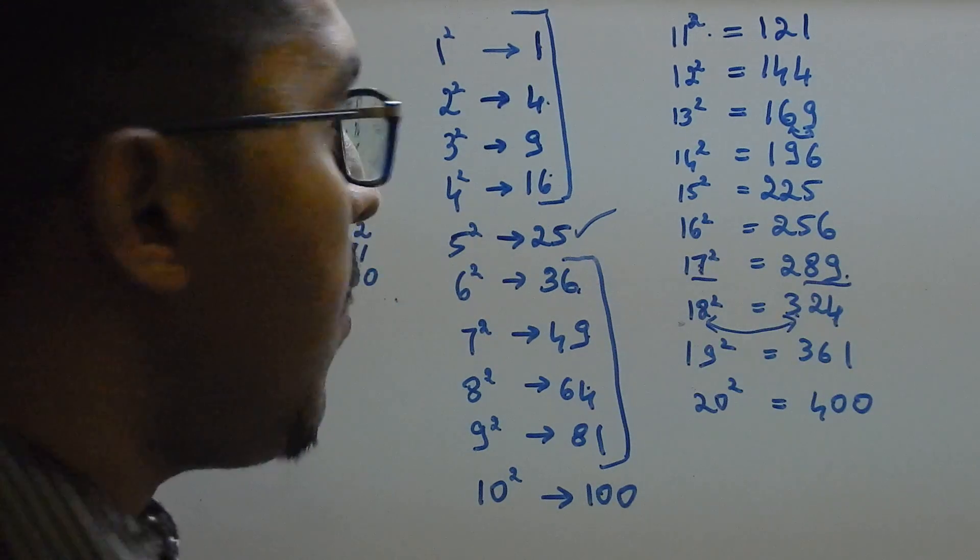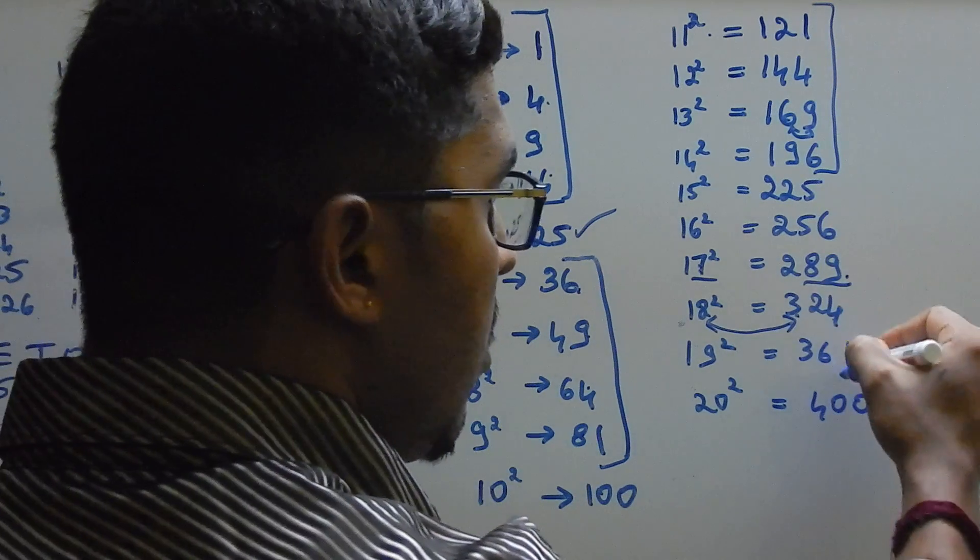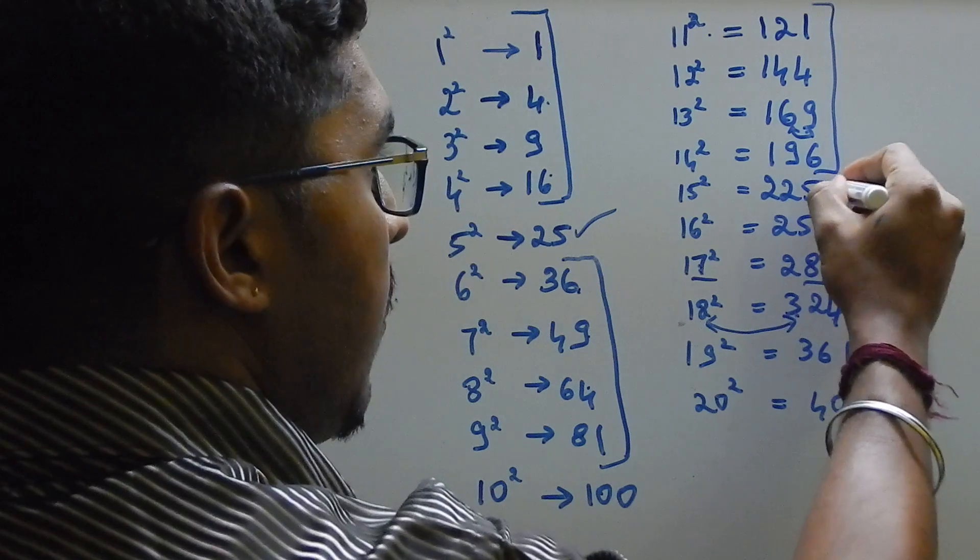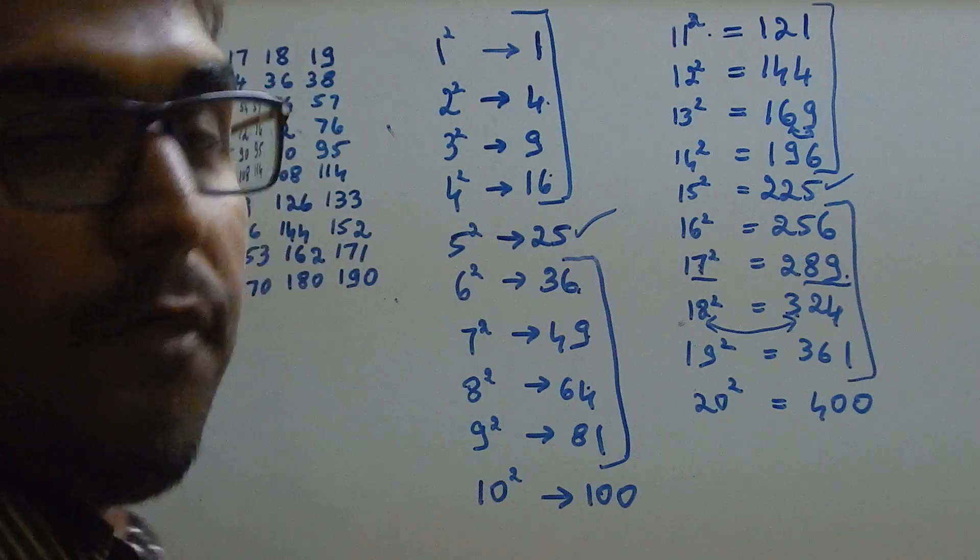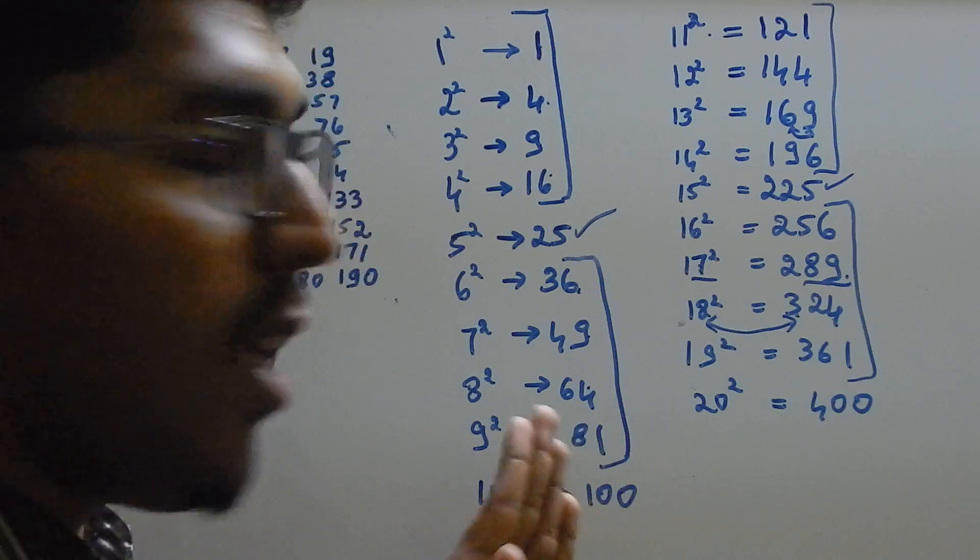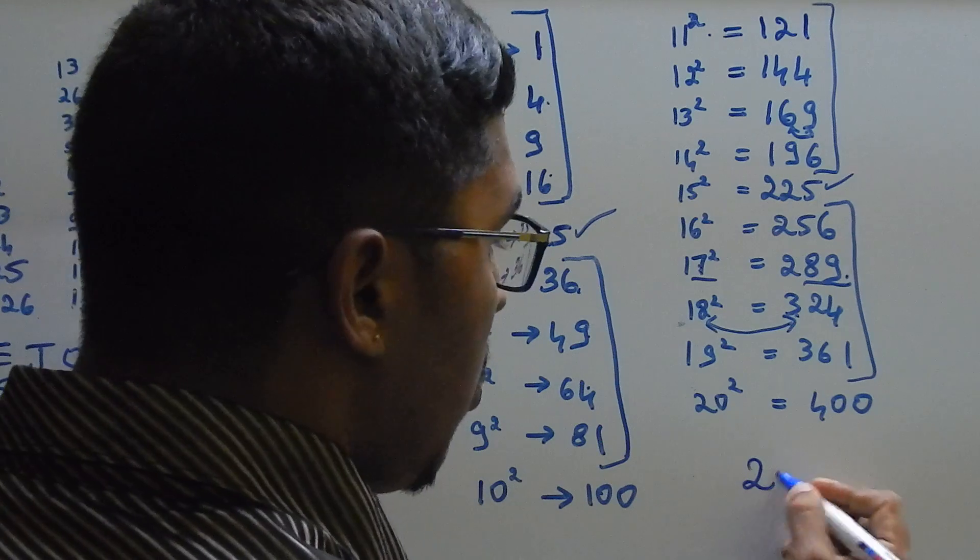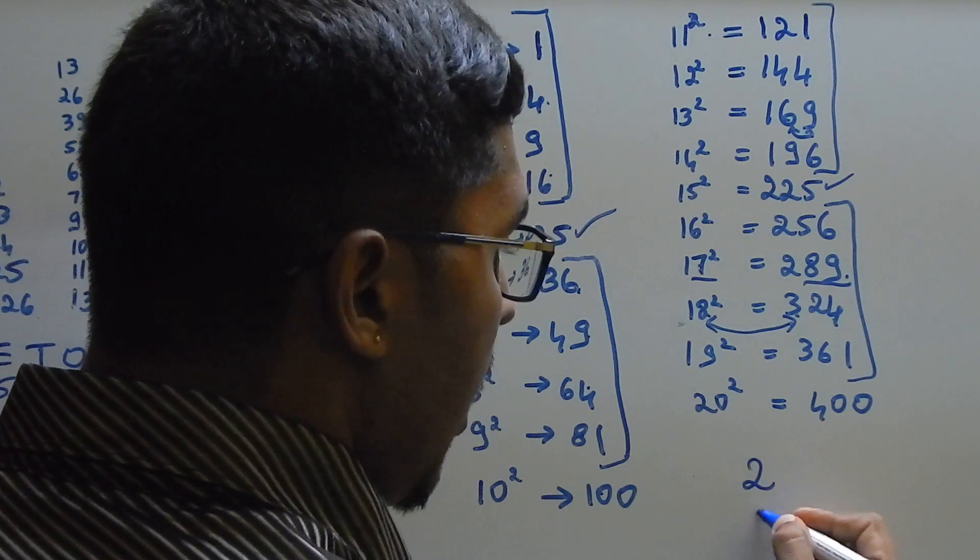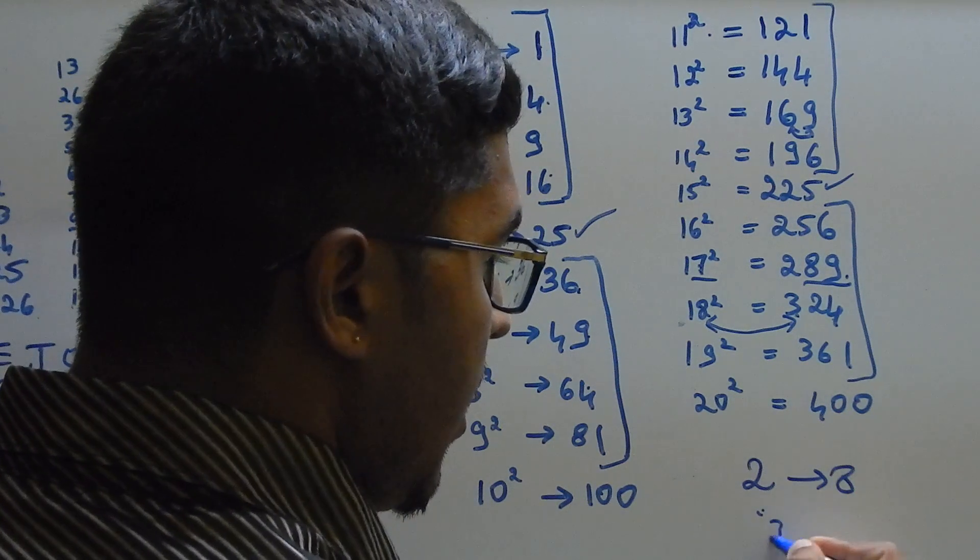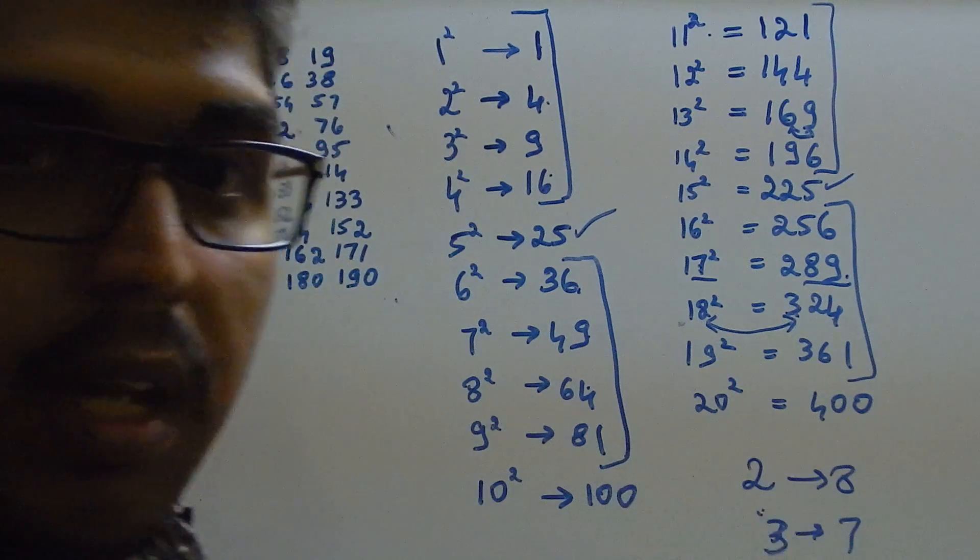Like this you can remember, and here also it follows the same pattern: 1, 4, 9, 6, 1, 4, 9, 6, 1, 4, 9, 6 and this is middle one 5. If the number ends with 1, 4, 9, 6 or 5 then only it is a perfect square. If number ends with 2, 8, 3, 7 it is not a perfect square.